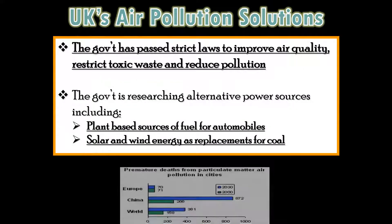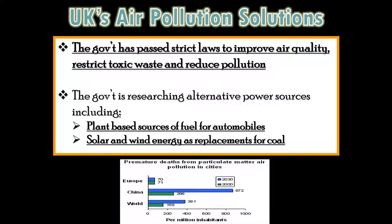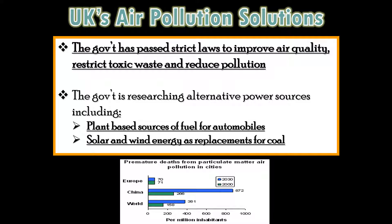Now, how did Britain try to reduce its problem with air pollution? They've made a number of changes. The government has passed strict laws to improve air quality, which has reduced pollution, though not eliminated it. They've also started promoting plant-based fuel sources for automobiles, and solar and wind energy are on the rise. All of these are in various stages of development — we have not reached a final solution to end air pollution.